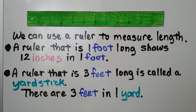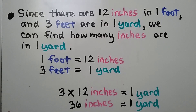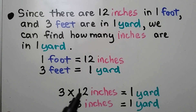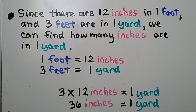We can use a ruler to measure length. A ruler that is one foot long shows 12 inches in one foot. A ruler that is three feet long is called a yardstick. There are three feet in a yardstick. Since there are 12 inches in one foot and three feet in one yard, we multiply three times 12 inches — because 12 inches is one foot and we need three of them — to find how many inches are in one yard.